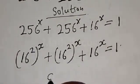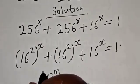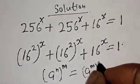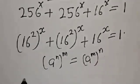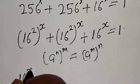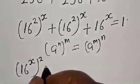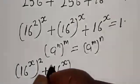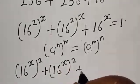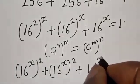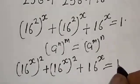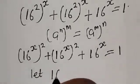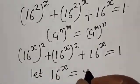Now 256 is the same thing as 16 squared. So we have 16 squared raised to power x plus 16 squared raised to power x plus 16 raised to power x is equal to 1. Remember, a raised to power n raised to power m is the same thing as a raised to power n times m. Then we have 16 raised to power 2x plus 16 raised to power 2x plus 16 raised to power x is equal to 1.